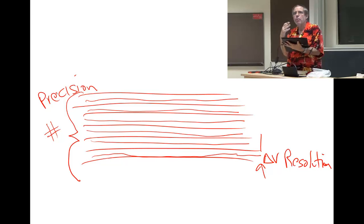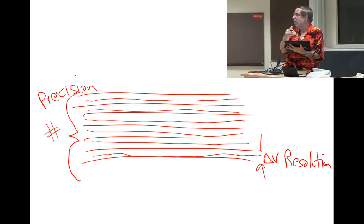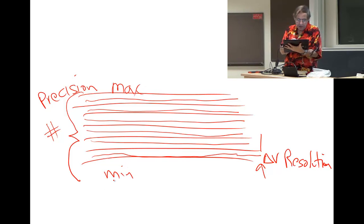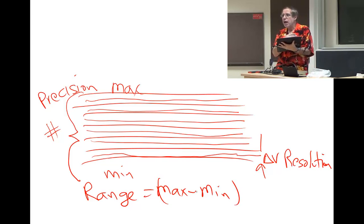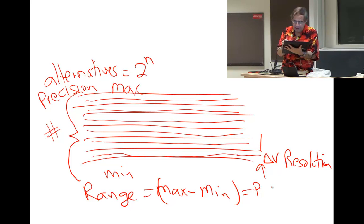There's one more significant parameter: a maximum value and a minimum value, which defines a range in voltage. Putting the pieces together: range equals precision in alternatives — which equals 2 to the number of bits — times the resolution.